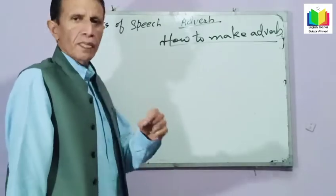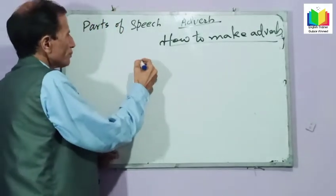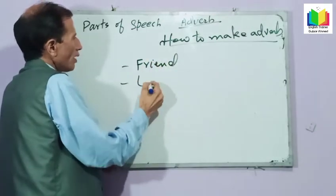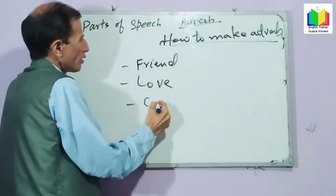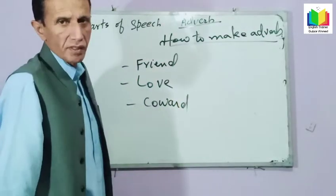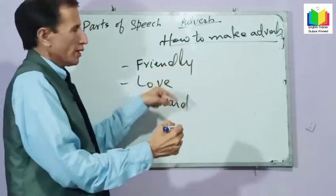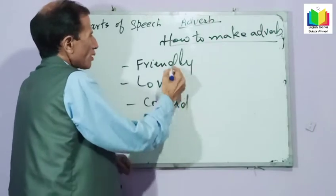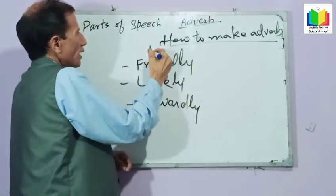Adverb is formed from adjective. But note that words like friend, love, coward — these are nouns. If you add -ly to a noun, the result is an adjective.